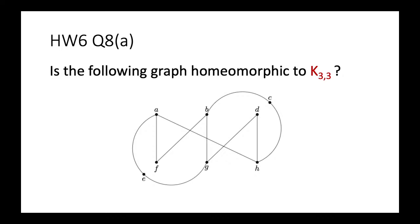The first question is: we want to find out whether the following graph is homeomorphic to K3,3. Let us recall: when we are talking about homeomorphic, we are allowed to do two kinds of operations. One is we can do a subdivision of an existing edge — we add a new vertex in between an existing edge so that the new vertex joins the original endpoints, replacing the edge. For instance, if I add a vertex I that joins A and F, this is called a subdivision operation: we replace the original edge AF by AI and IF.